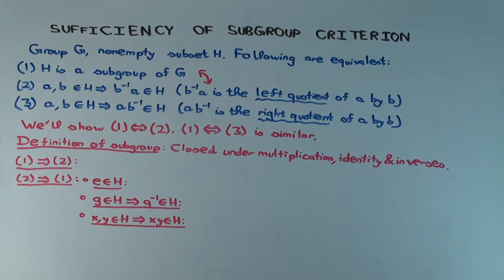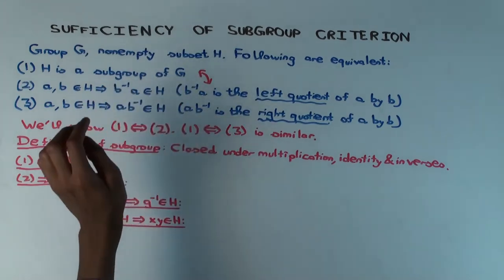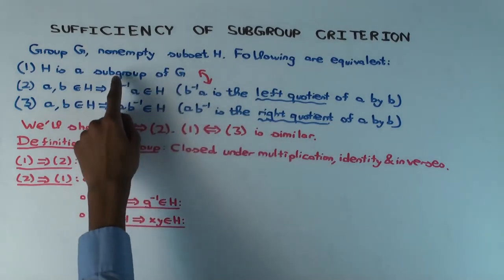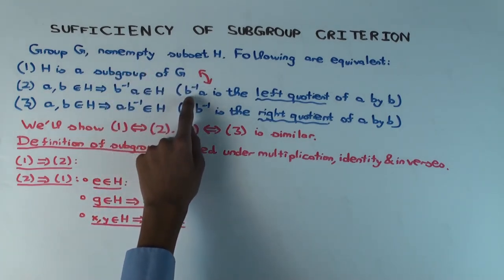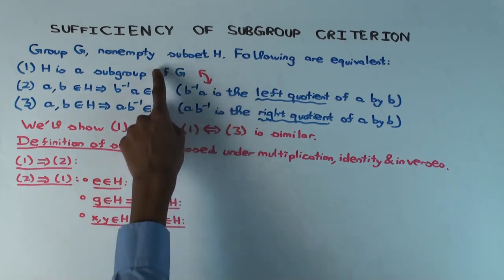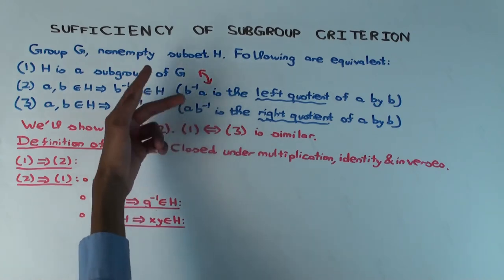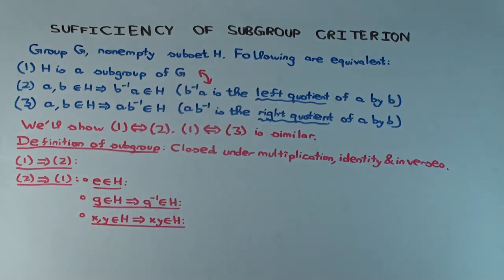Any subgroup has to be non-empty because it must contain the identity element. So with the non-empty condition as backdrop, we'll prove the equivalence of conditions 1 and 2: subgroup if and only if closed under left quotients. The proof of 1 equivalent to 3 is similar, and once you've shown 1 equivalent to 2 and 1 equivalent to 3, all three are equivalent. We'll concentrate on showing 1 implies 2 and 2 implies 1.